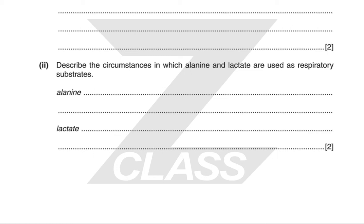Describe the circumstances in which alanine and lactate are used as respiratory substrates. Proteins and amino acids such as alanine are broken down when there is a lack of fat or carbohydrate, and lactate is used under anaerobic conditions.